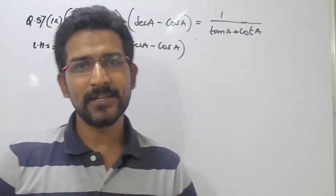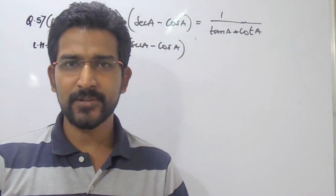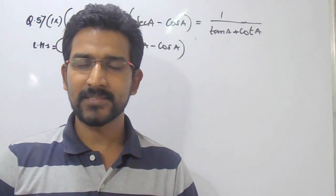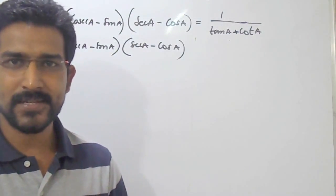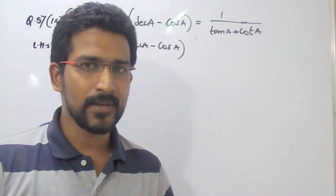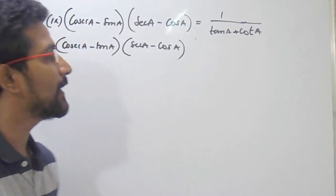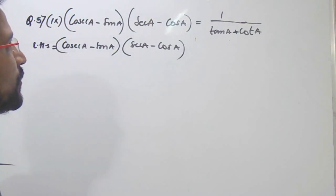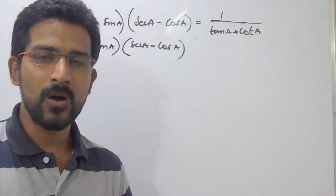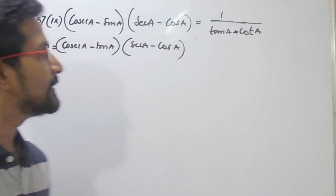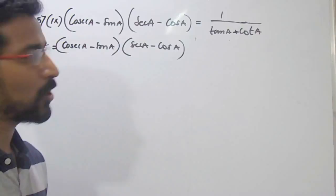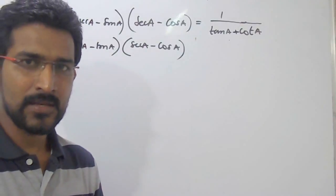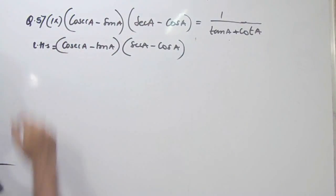Hello, so today in this session we are going to see the next sub-question, that is sub-question 9 of question number 5. In this we have to prove an identity that cosec A minus sin A into sec A minus cos A is equal to 1 upon tan A plus cot A. So we'll try to simplify the LHS first.